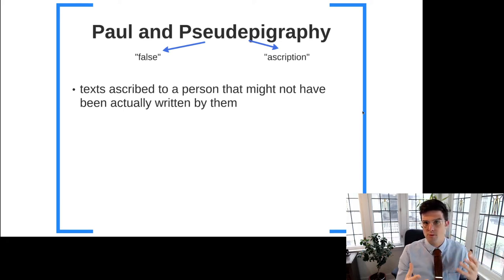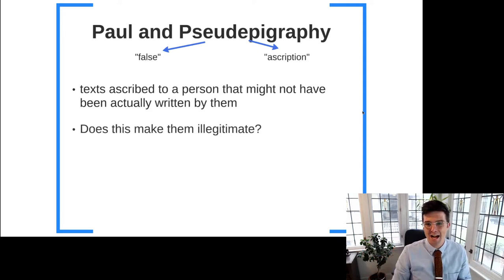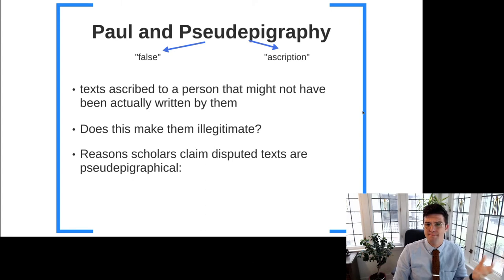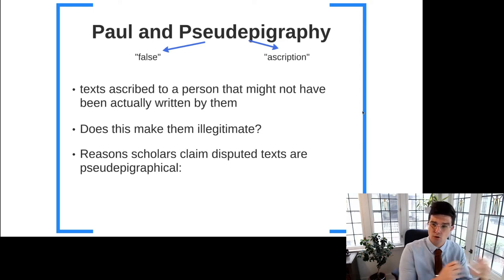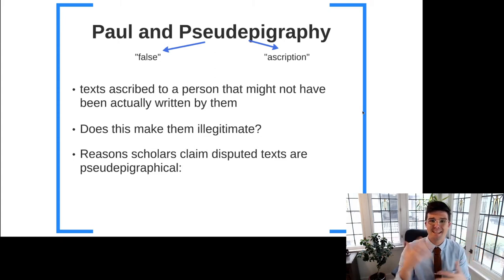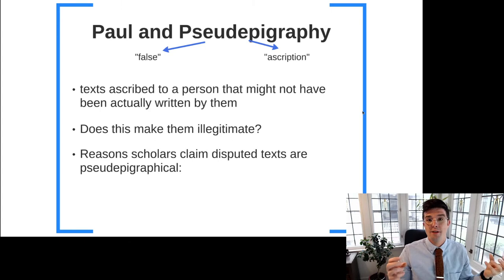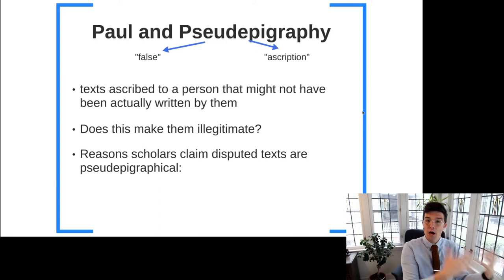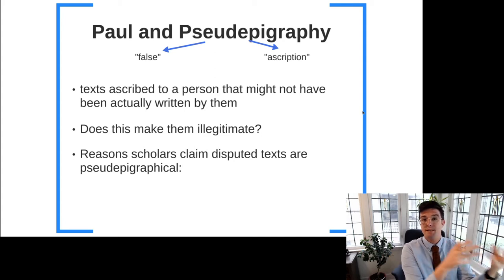When we're talking about pseudepigraphy, we're talking about texts ascribed to a person that might not have actually written them, but this does not make them necessarily illegitimate. Texts can be ascribed to a person in a way not intended to trick anyone. We have an example of this from our reading: Dr. Martin Luther King's 'Paul's Letter to the American Churches,' where we know Paul is not actually writing it, even though Dr. King ascribes it to Paul.